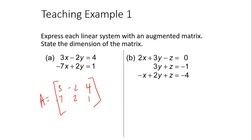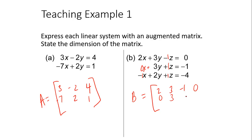When you name a matrix, it is with a capital letter — so B. When a term is missing, you replace it with a zero. When a coefficient is missing, you replace it with a one, because it's really not missing — it's implicitly a one. So the matrix entries are: two, three, negative one, zero; zero, three, one, negative one; negative one, two, one, negative four. That would be your augmented matrix.